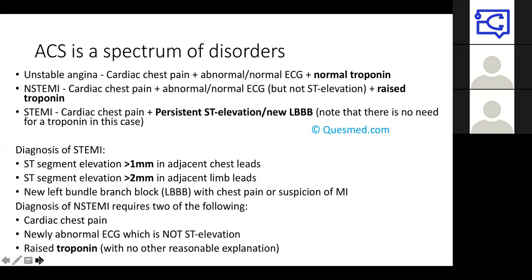Acute coronary syndrome is a spectrum of disorders. We have a spectrum ranging from unstable angina all the way to ST elevation MI. With unstable angina, you have chest pain, normal or abnormal ECG, but the key is a normal troponin. With an NSTEMI, you can have any ECG changes apart from ST elevation, with a raised troponin. With a STEMI, you essentially need to have persistent ST elevation or new left bundle branch block. In most acute settings — especially the PCI setting — you would just crack on without waiting for a troponin.